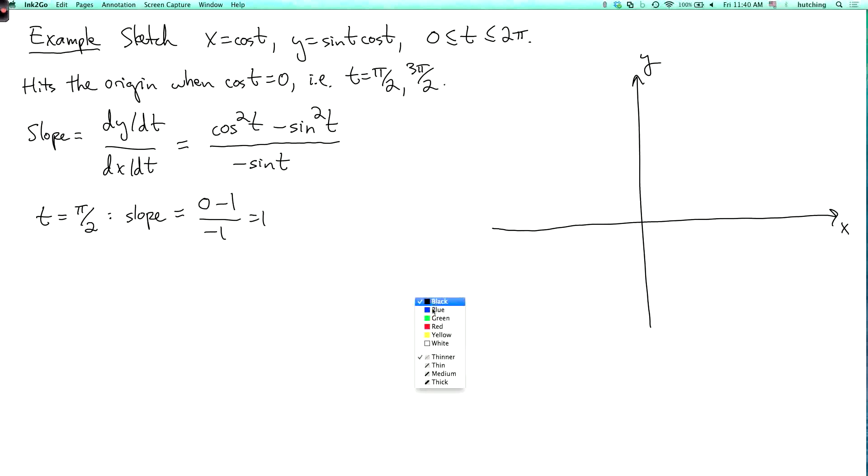So let's draw that line here. So here's the line of slope 1 through the origin. This is the tangent line when t equals pi over 2.